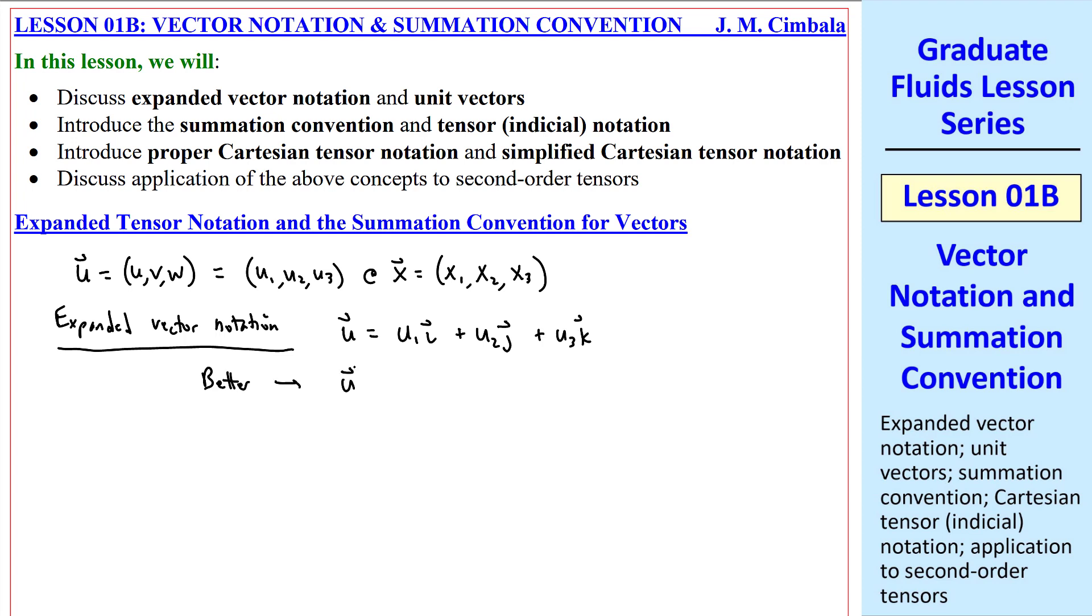But in keeping with our convention of indices, it's better to write it this way: u equal u1 e1 vector, plus u2 e2 vector, plus u3 e3 vector, where we have replaced i, j, k by e1, e2, and e3, where these are now our unit vectors.